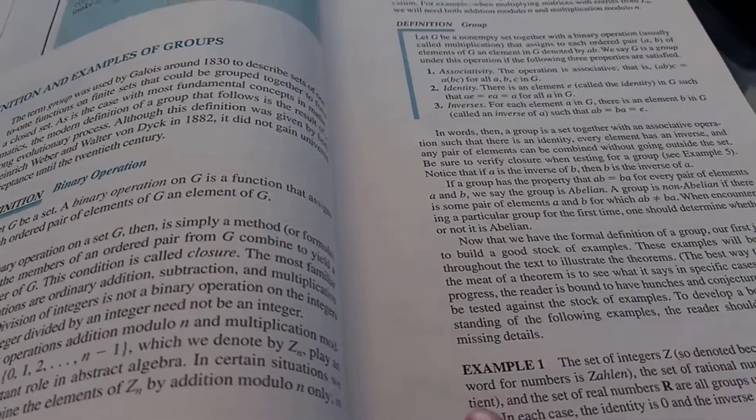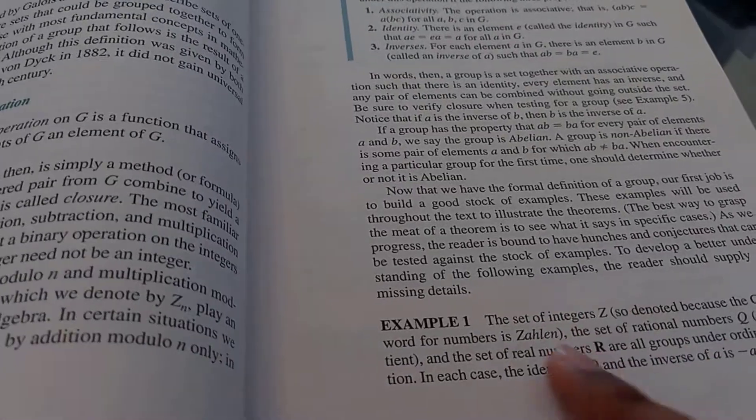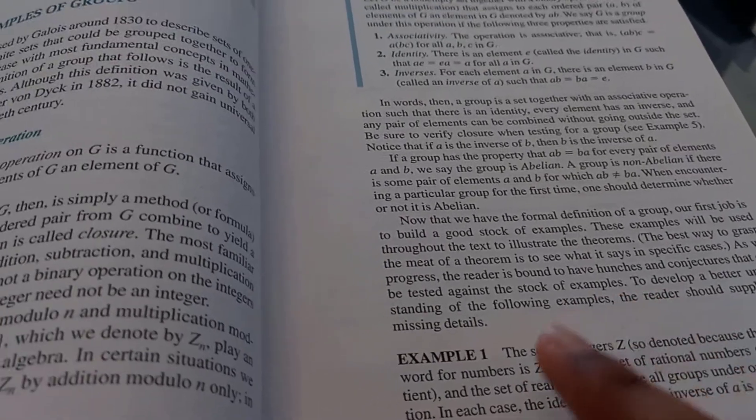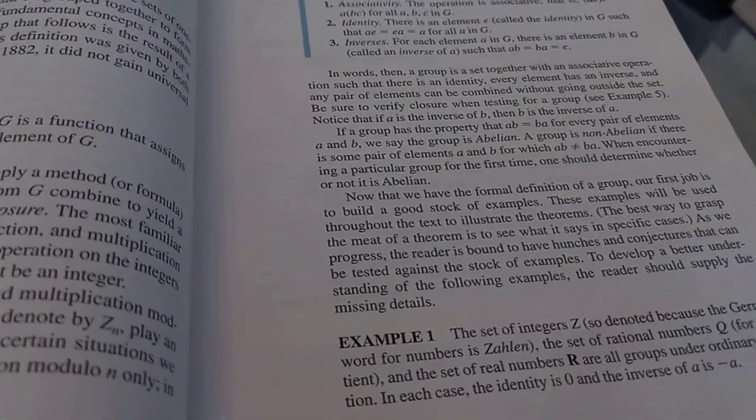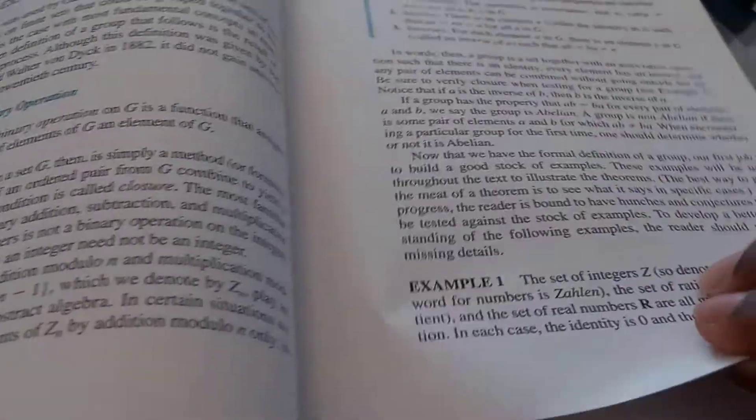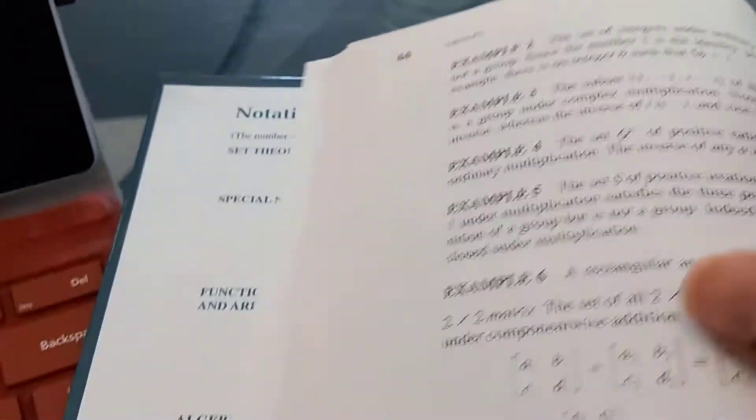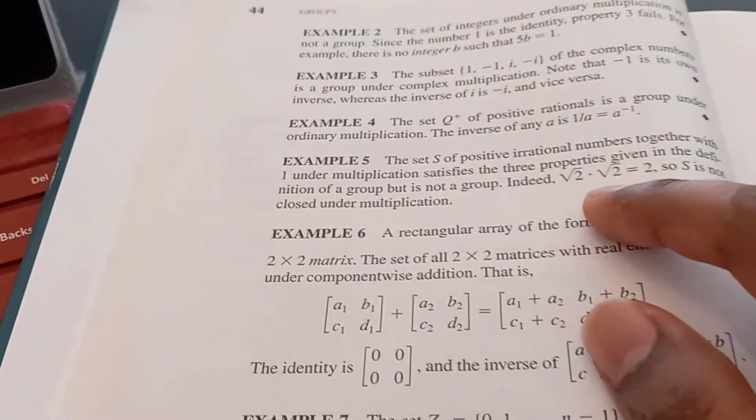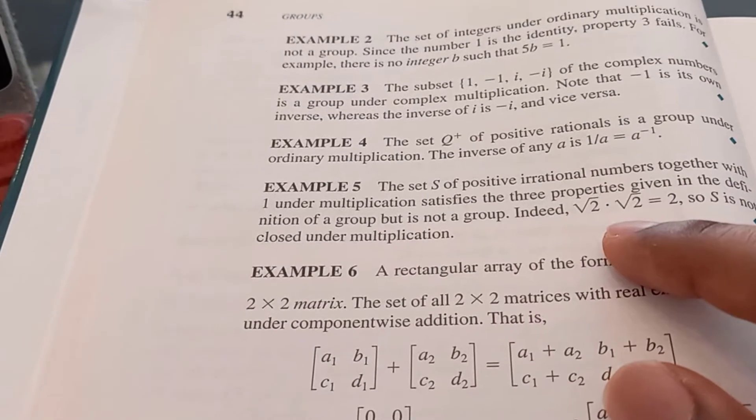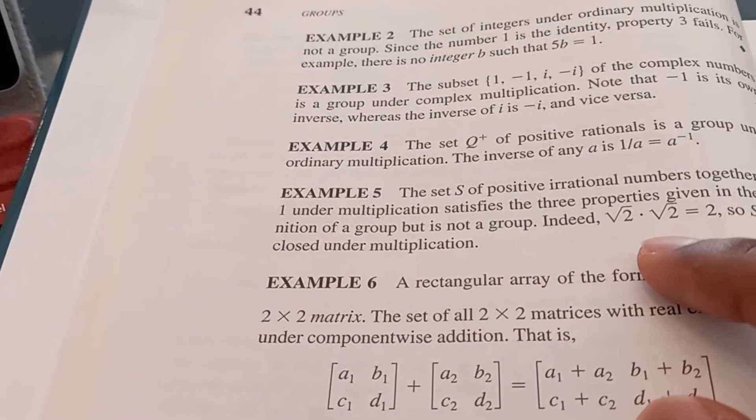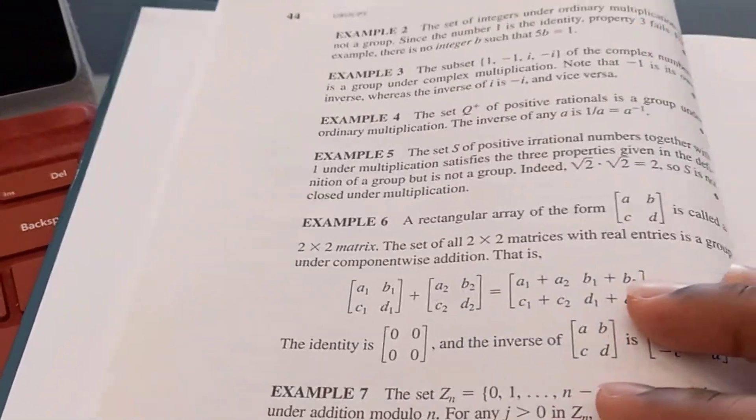Every time I encounter an example, I will write down whether the thing that is supposedly a group is abelian or not. I will write it down. And why? Do that for any example that you encounter. Because you won't have to put any effort into memorizing it when you do this, if you keep up with that habit. Because by the how many examples do we have here? We have 10 examples.